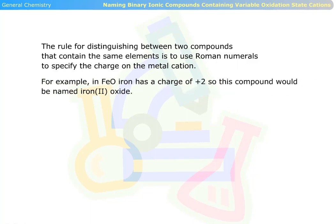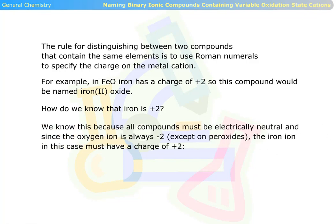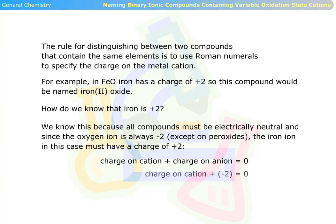For example, in FeO iron has a charge of plus two, so this compound would be named iron(II) oxide. How do we know that iron is plus two? We know this because all compounds must be electrically neutral and since the oxygen ion is always negative two, the iron ion in this case must have a charge of plus two. The charge on cation plus charge on anion equals zero. Charge on cation plus negative two equals zero. Charge on cation equals positive two.